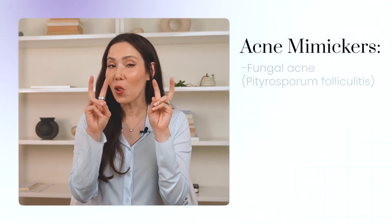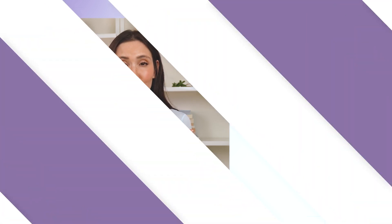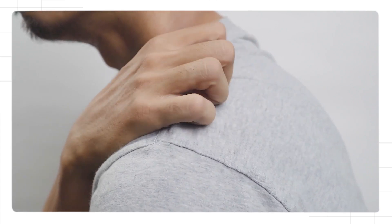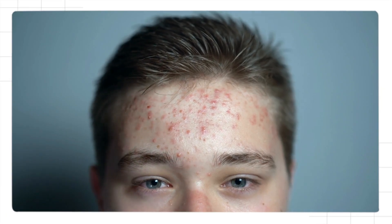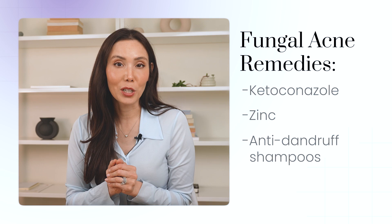Oftentimes people think they have acne and try all these over-the-counter things and their skin just gets worse. Fungal acne, or Pityrosporum folliculitis, is one acne mimicker that occurs when yeast builds up in your hair follicles. It can look a lot like closed comedones, but what makes it different is that fungal acne can sometimes itch. When inflamed, you could see a bunch of pink monomorphic bumps — meaning they all look very similar in size and shape. Fungal acne likes to occur on the forehead, chest, and back. It responds better to things like ketoconazole, zinc, and anti-dandruff shampoos.